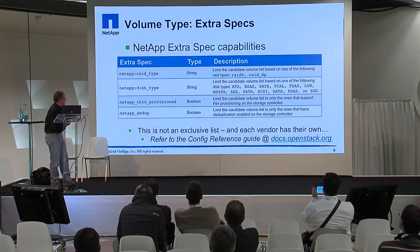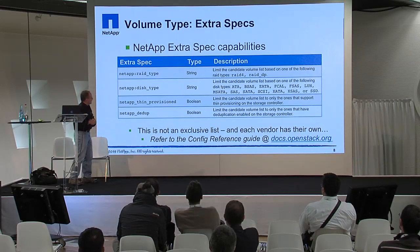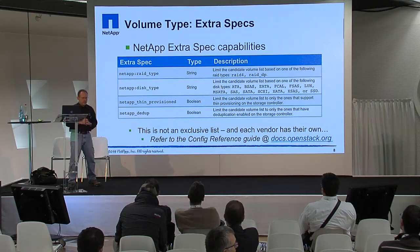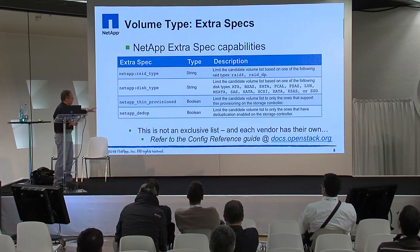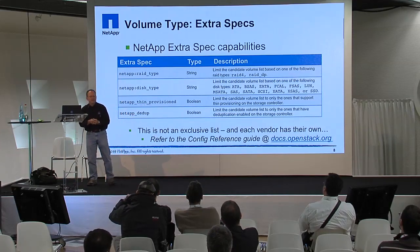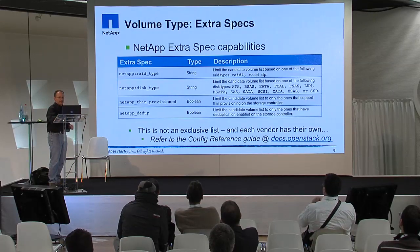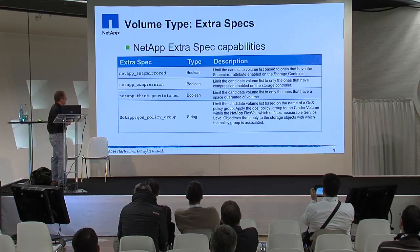Here are some of the extra specs — RAID type, disk type, which is interesting because you can specify whether you want provisioning on SSDs, SATA drives, or SAS drives. Thin provision — you can limit the candidate volume list to only support thin provisioning, looking for volumes that have thin provisioning turned on. And deduplication, which we've talked about quite a bit. Some of the other extra specs available include SnapMirror, compression, thick provision, and policy group.